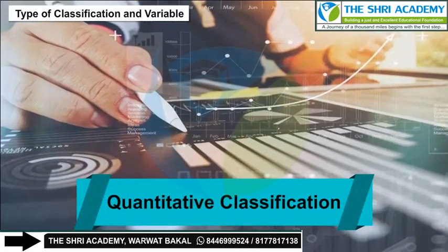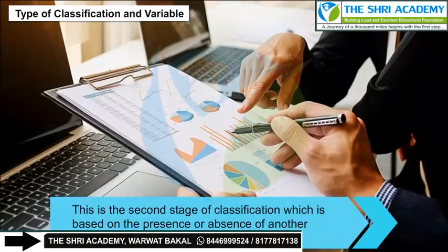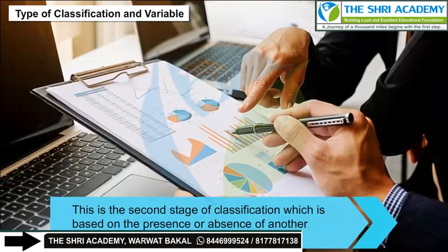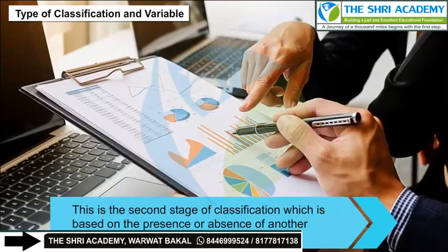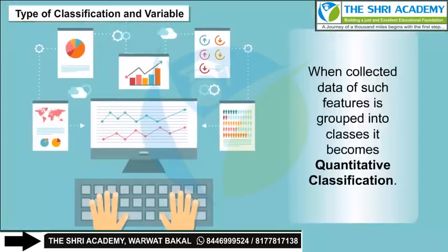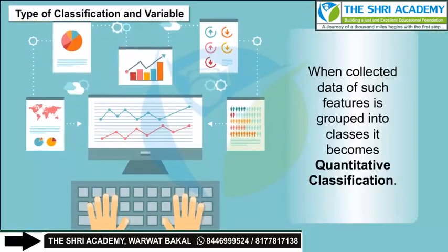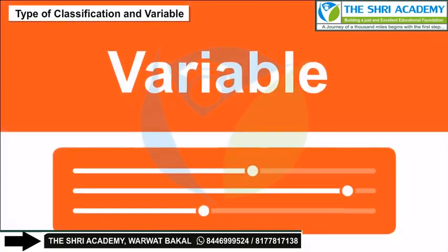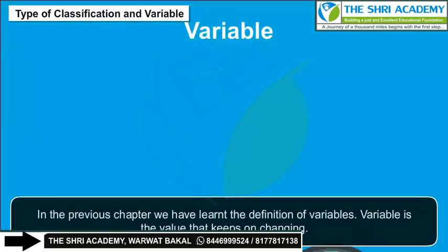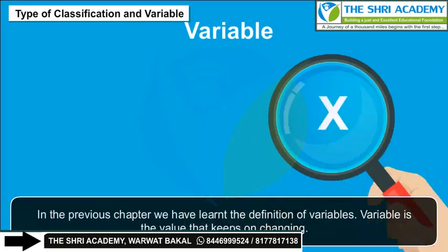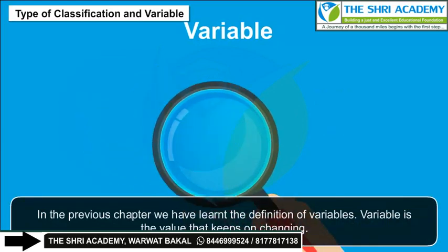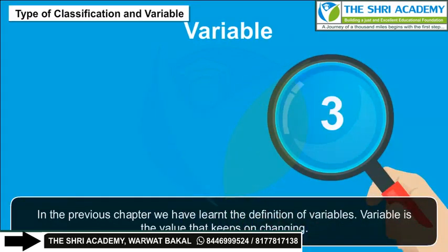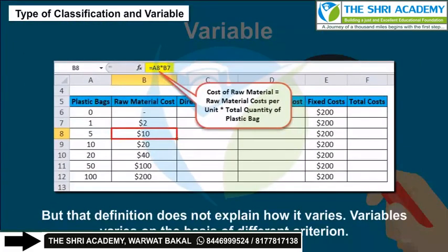Quantitative classification: this is the second stage of classification, which is based on the presence or absence of another attribute. When collected data of such features is grouped into classes, it becomes quantitative classification. A variable is a value that keeps on changing, and variables vary on the basis of different criteria.